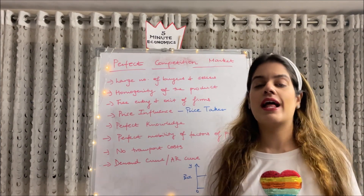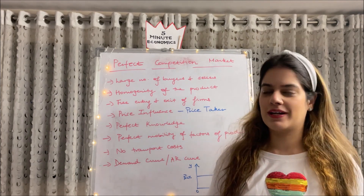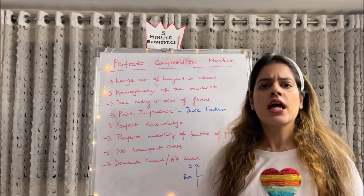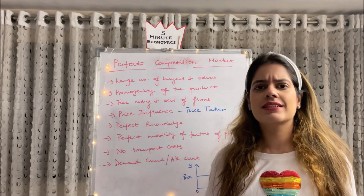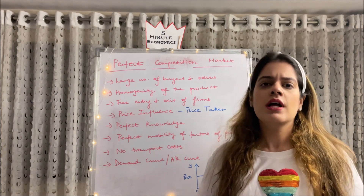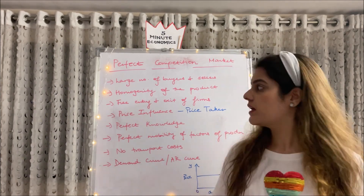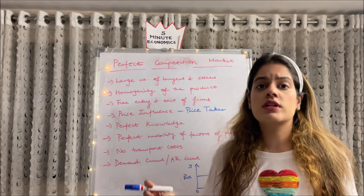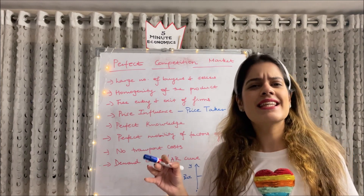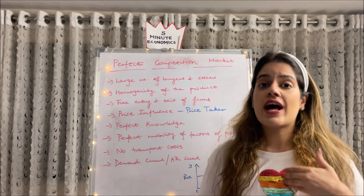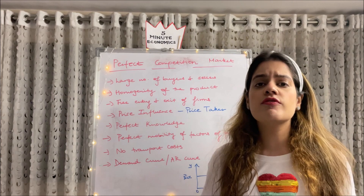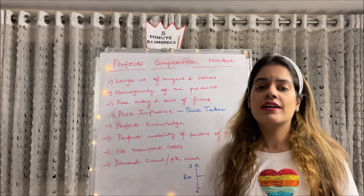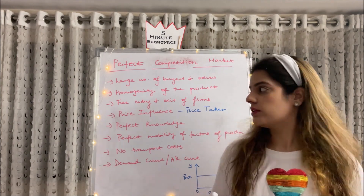Let's talk about a perfectly competitive market, which in reality is probably a rare kind of market. Number one feature is large number of buyers and sellers — there is a huge number of both, and since they are in such large numbers, each individual has a negligible effect on the market. Next is homogeneity of the product — this is a very important assumption. The product being sold is exactly homogeneous, so as a buyer I would be indifferent between buying from firm A, firm B, or firm C, because all of them have exactly the same product.